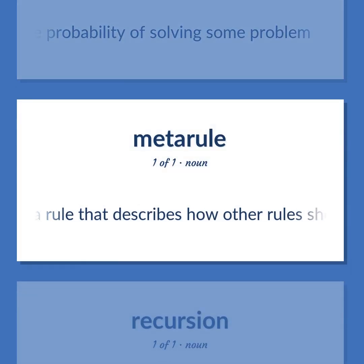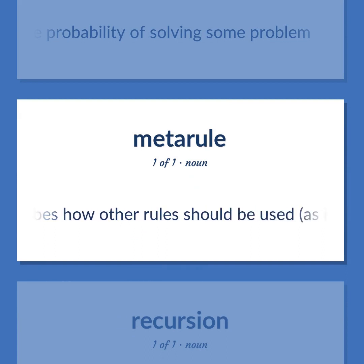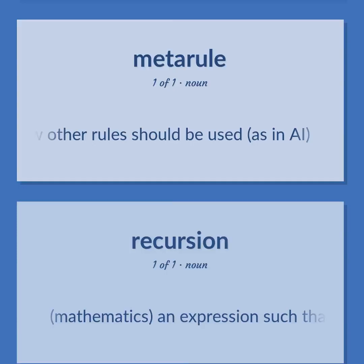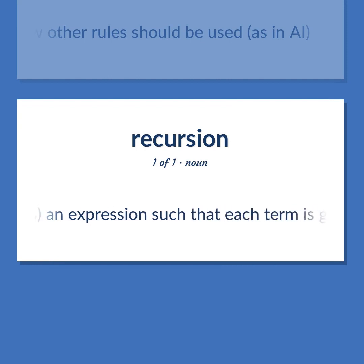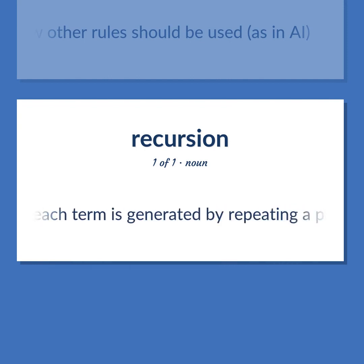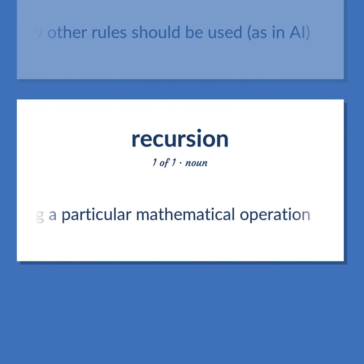Meta-rule: a rule that describes how other rules should be used, as in AI. Mathematics: an expression such that each term is generated by repeating a particular mathematical operation.